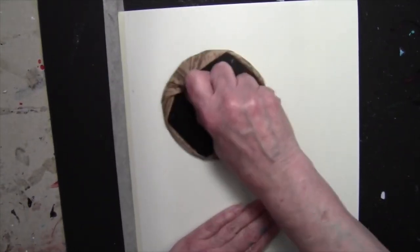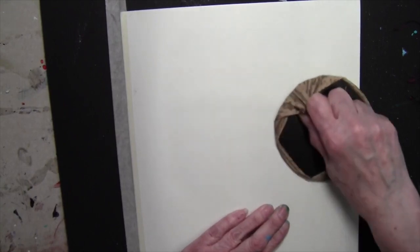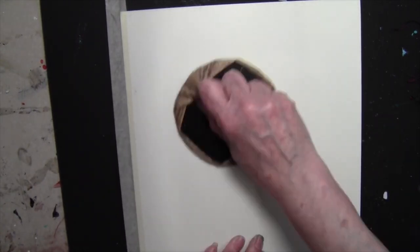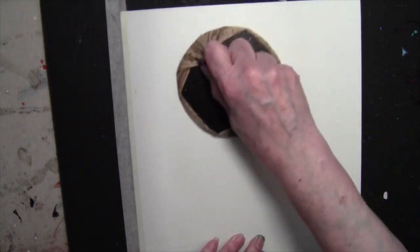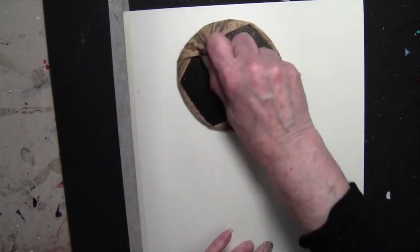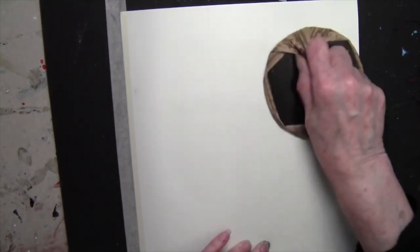And with the Baron, I try to go do circular strokes. And I try to go over everything at least twice, putting more pressure on the area where I think the clouds are, because that's going to be a little bit harder to print.